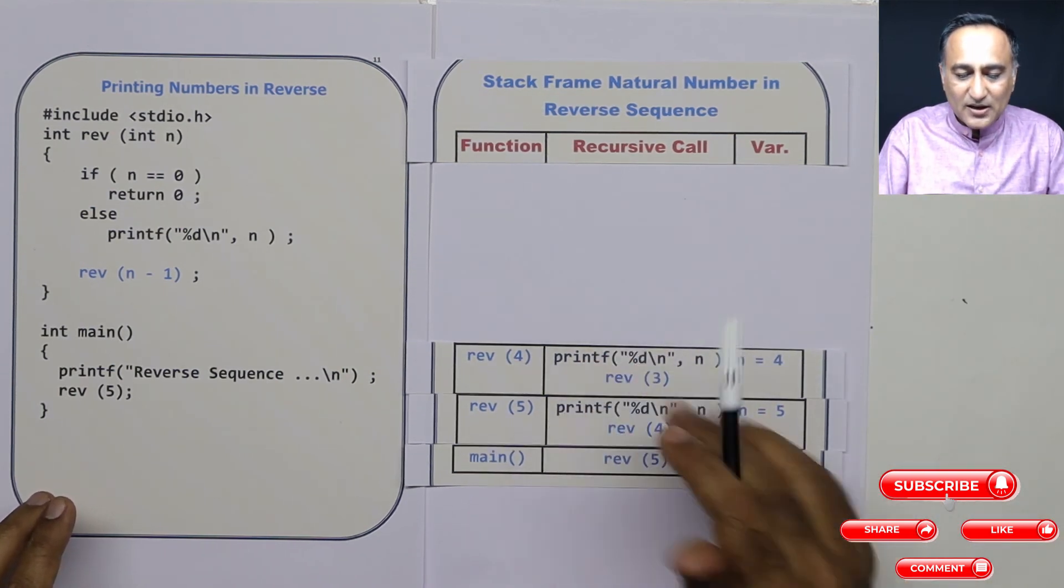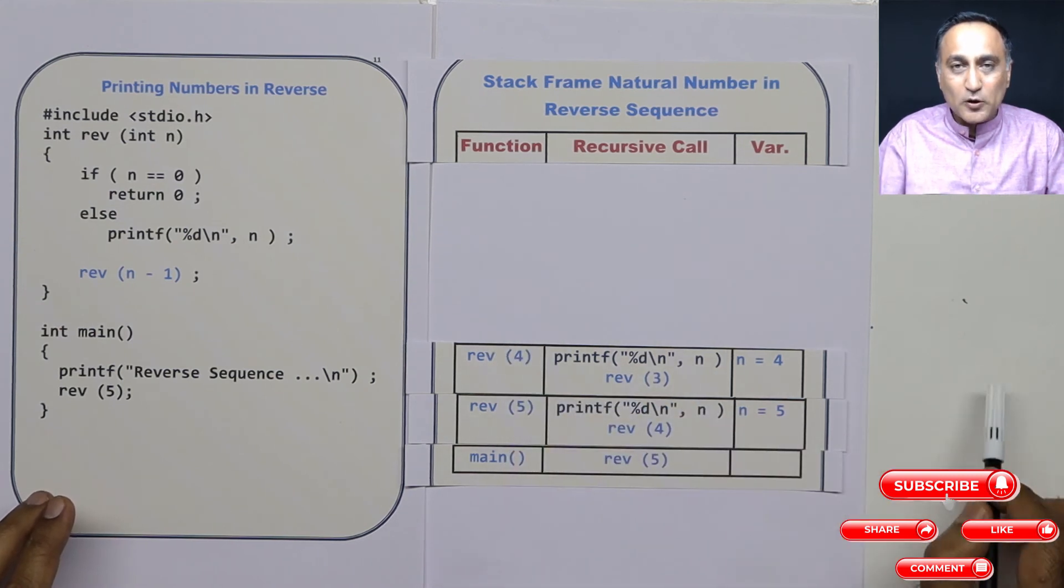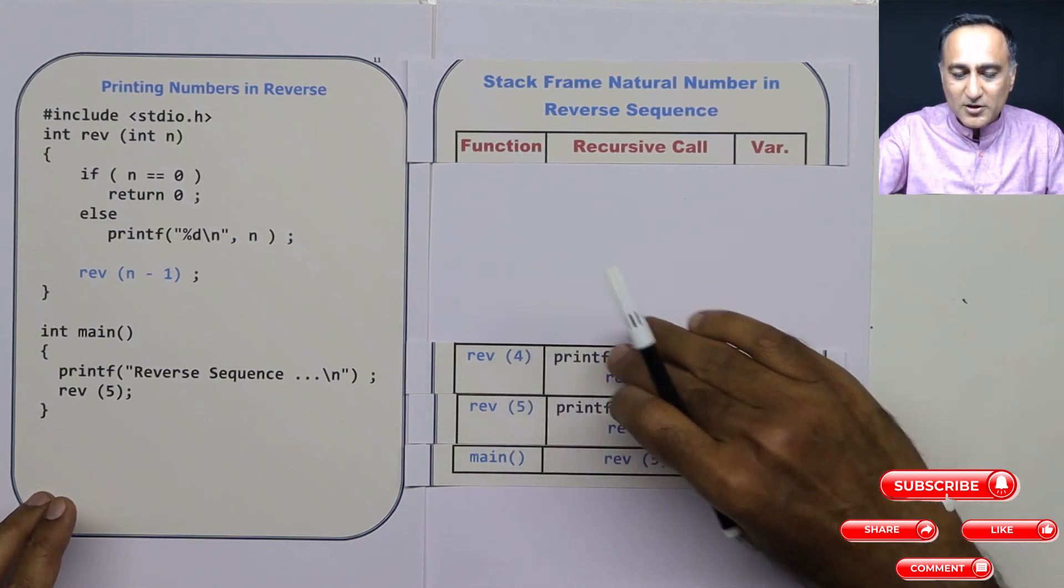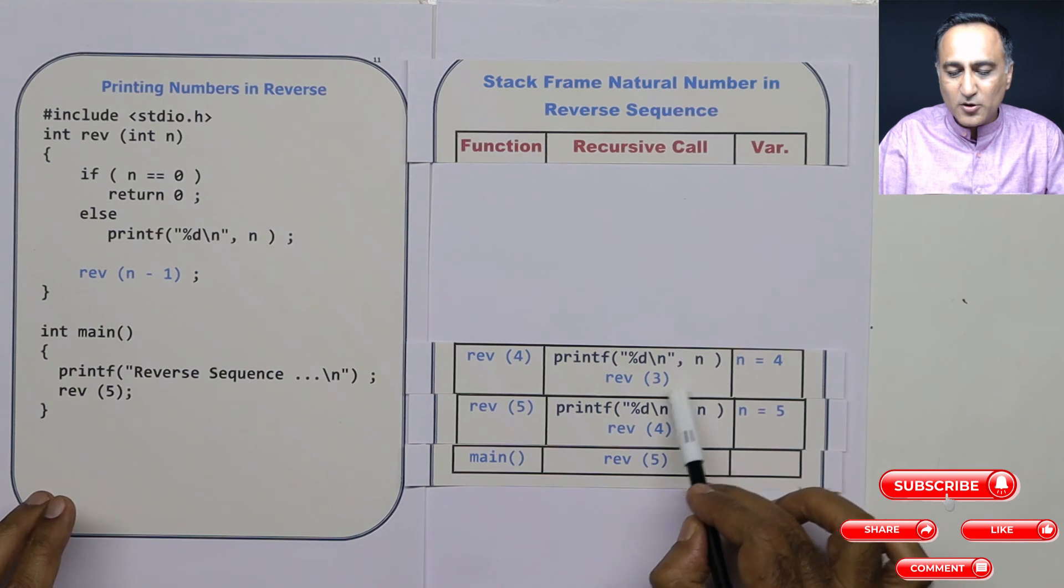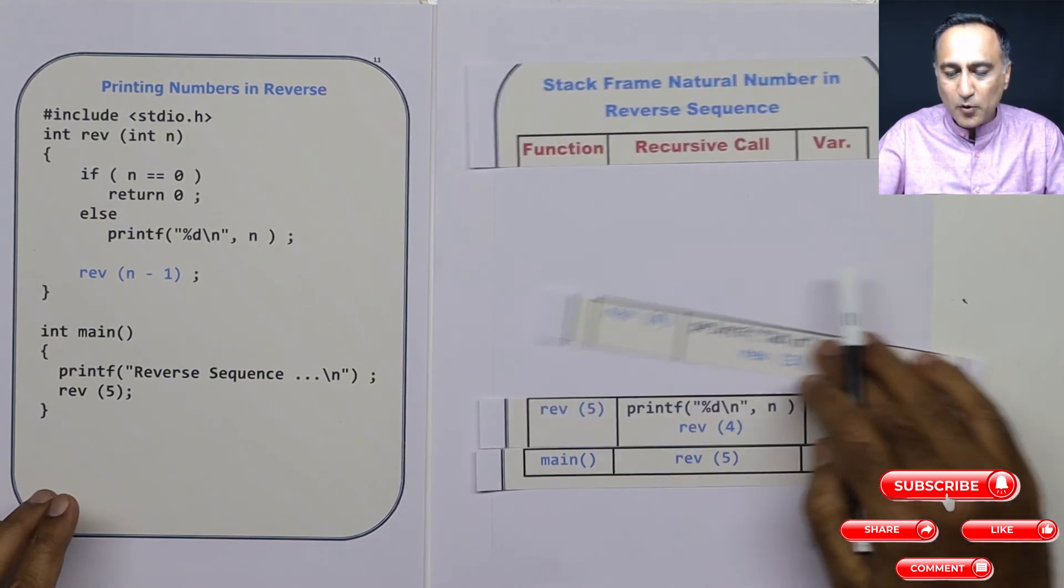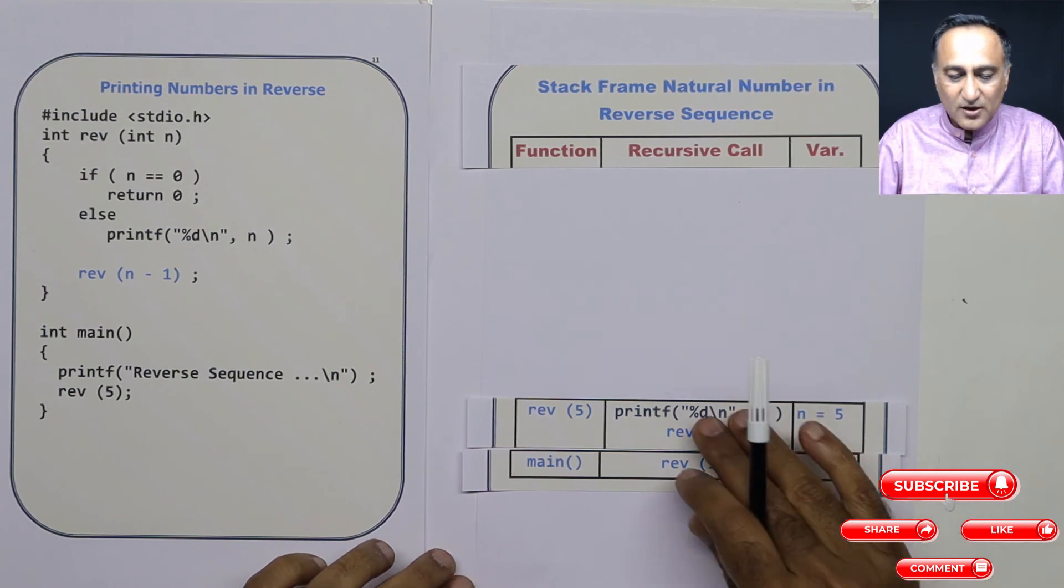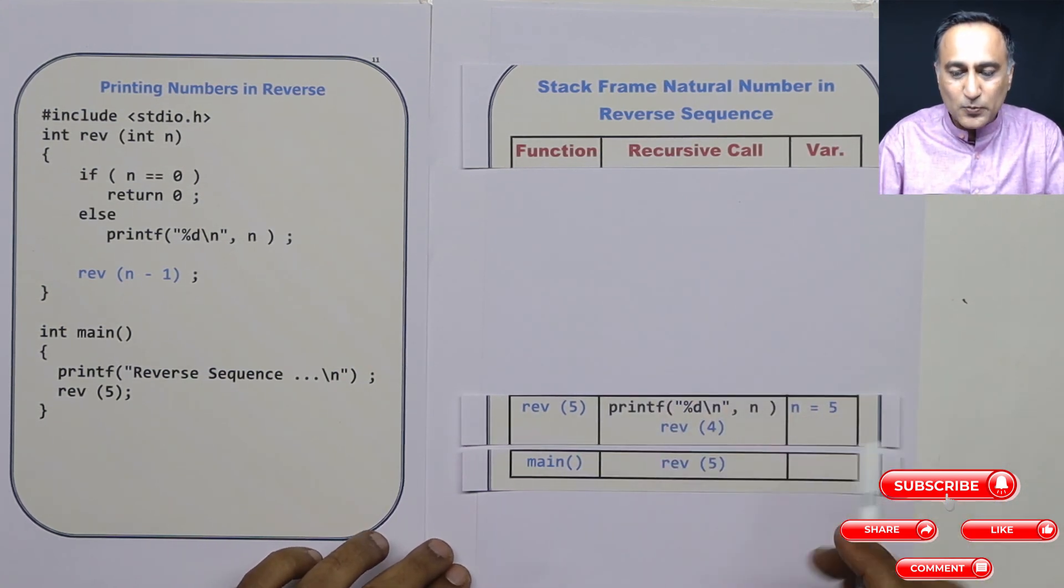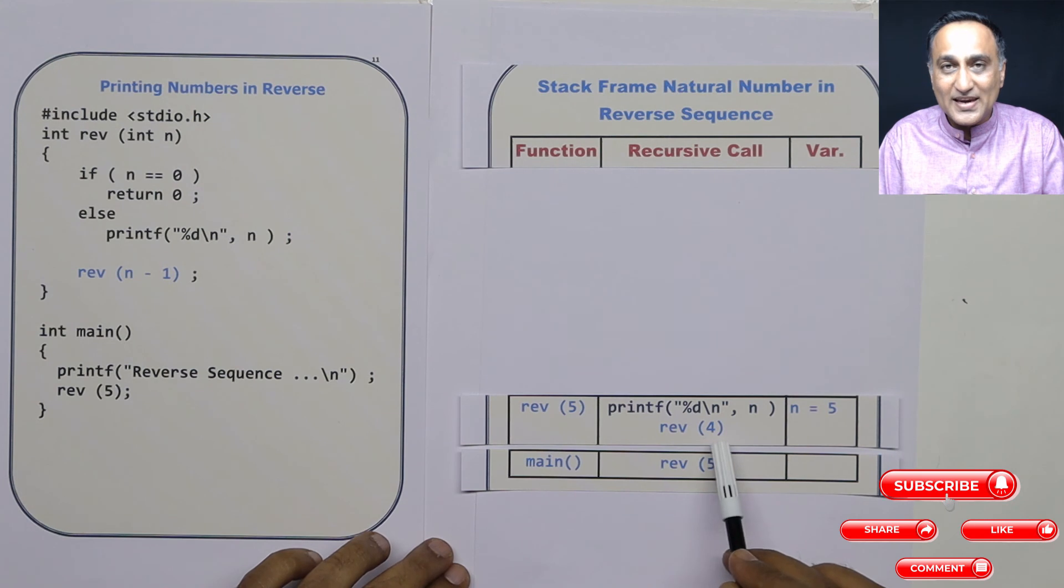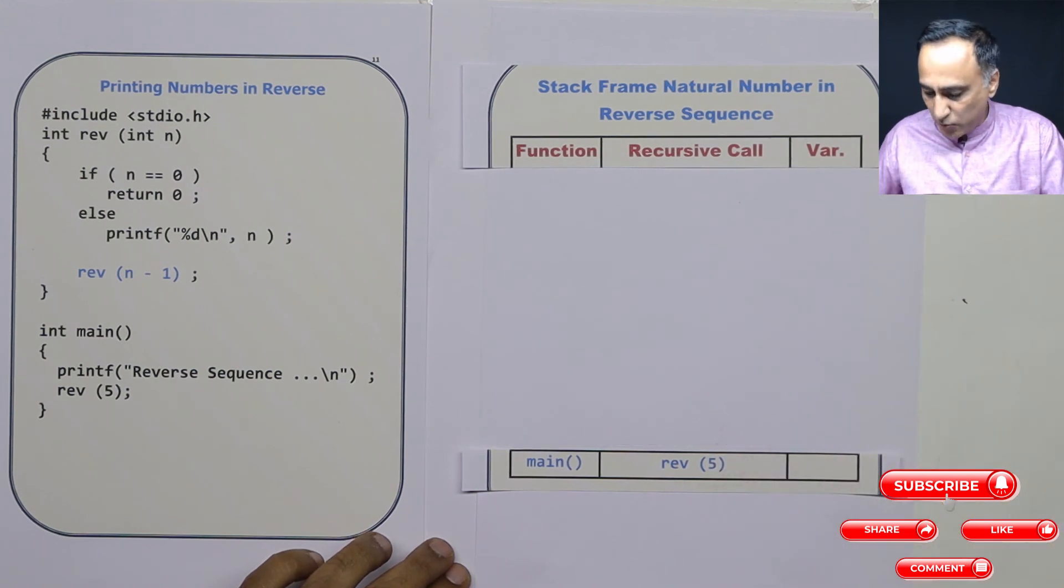Then I come here, reverse of 3 had already been popped out. So reverse of 4 also has completed execution because this got executed. So I pop this out. Now what happens is reverse of 4 was popped out indicating this was already executed. So I pop this out.